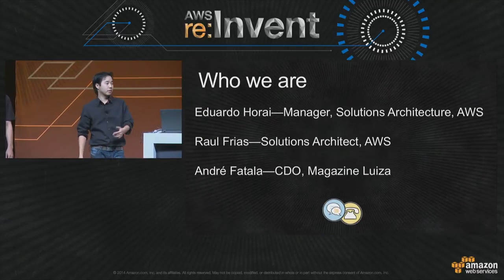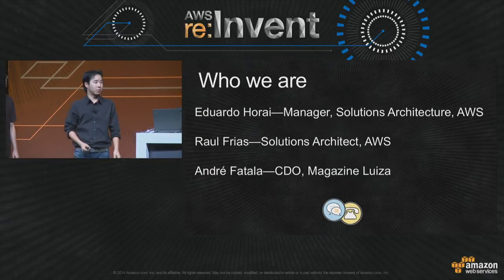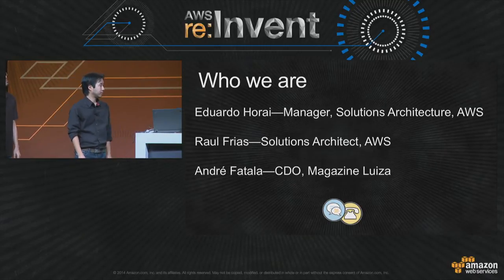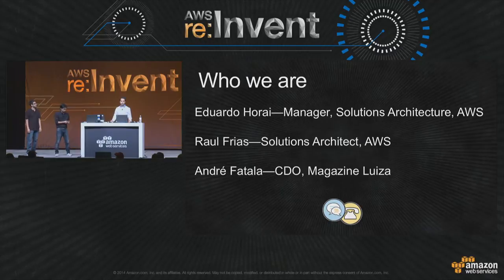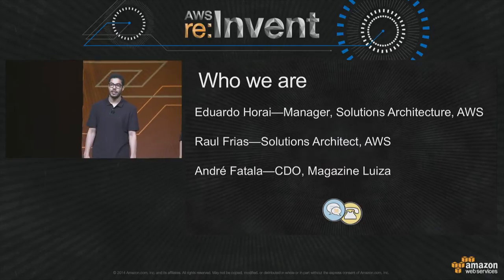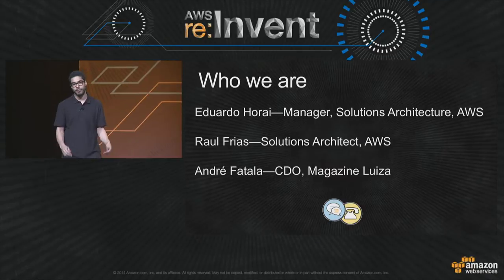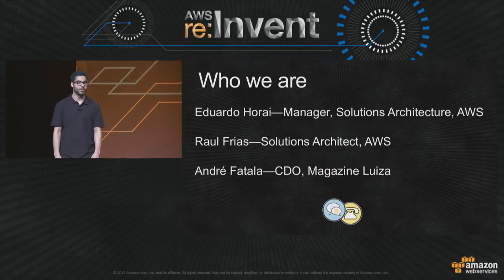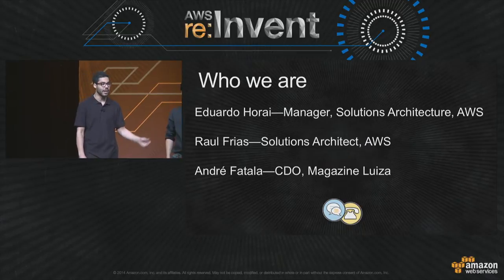I am Eduardo Roray. I manage the AWS solutions architecture team in Latin America, based out of São Paulo. My name is Raul Frias. I'm a solutions architect for AWS, based in Mexico City. And my name is André Fatala. I'm a CDO, Chief Digital Officer of Magazine Luiza, and I'm here to tell you how we migrated our e-commerce platform to AWS using the best practices of XA.